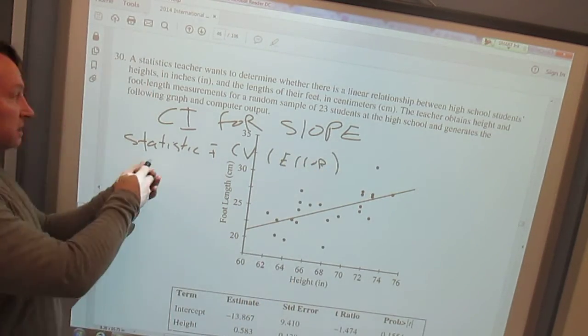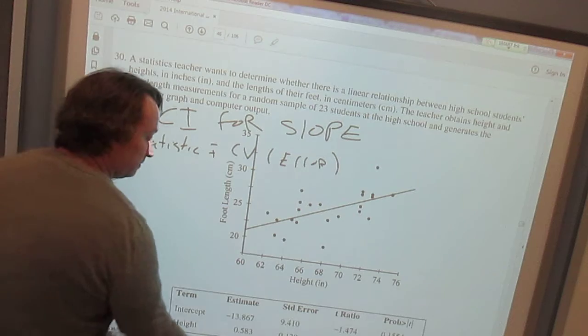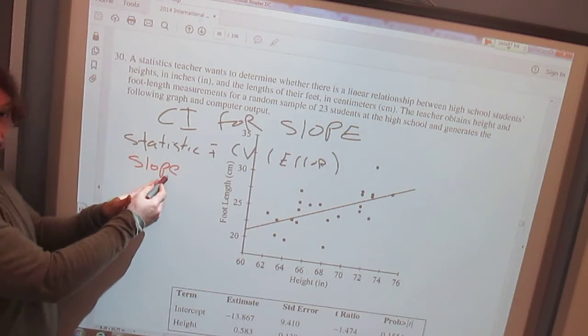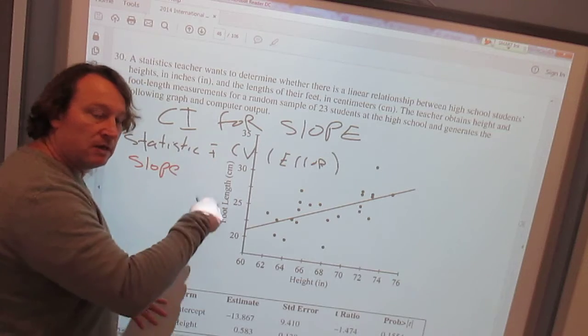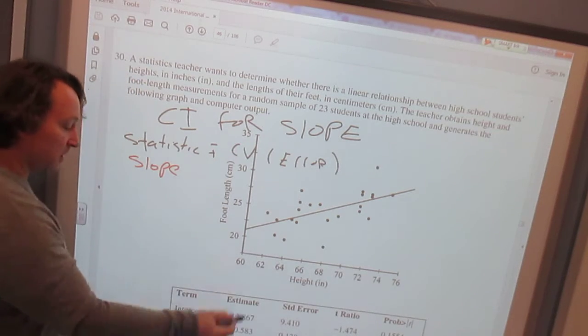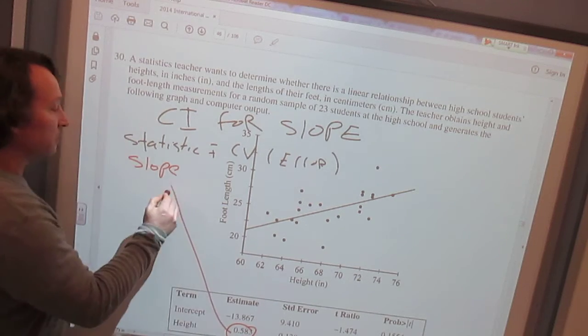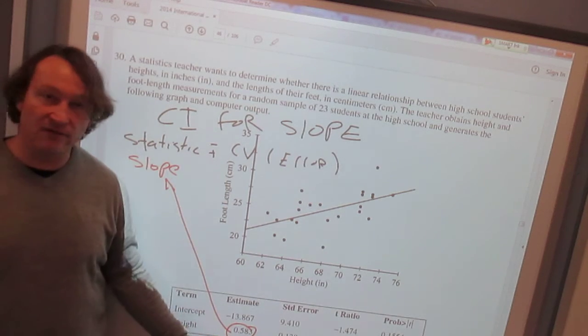Very good. Your statistic for this is your slope. So if we're doing a confidence interval for the slope, we've got to know where to take it. We have another one that we've done where we showed you where everything is, but slope would be the one that's named or called variable. Your estimate would go here, 0.583.